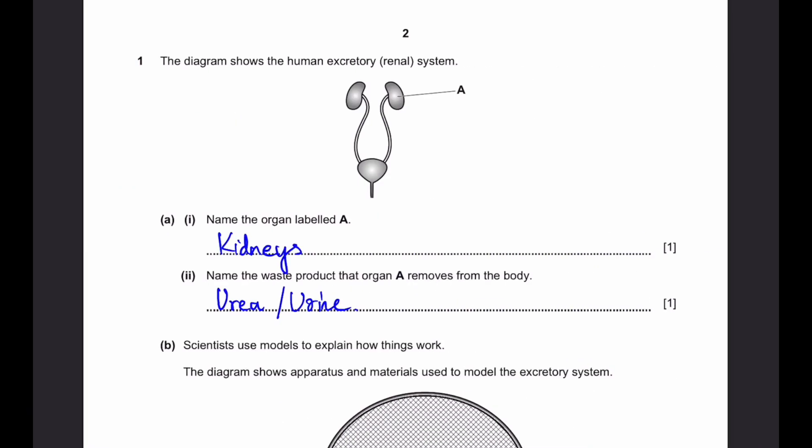Question 1. The diagram shows the human excretory system. Part 1: Name the organ labeled A. That's simply the kidneys. Part 2: Name the waste product that organ A removes from the body. That's just urea or urine. These two are just direct questions, that's why there's no big explanation.